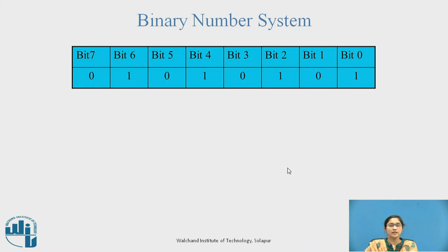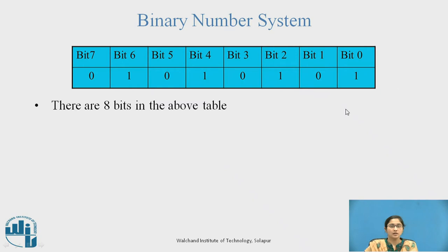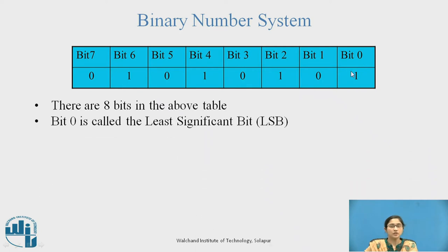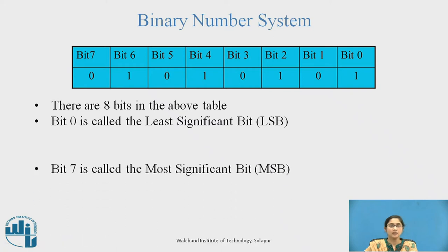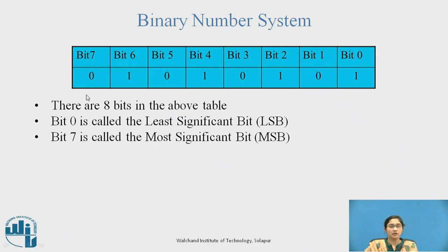This is one example for the binary number system. From bit 7 to bit 0, the binary number 01010101 is represented. Here, there are a total of 8 bits from 0 to 7. Bit 0 is called the least significant bit, i.e., LSB. Bit 7 is called the most significant bit, i.e., MSB.